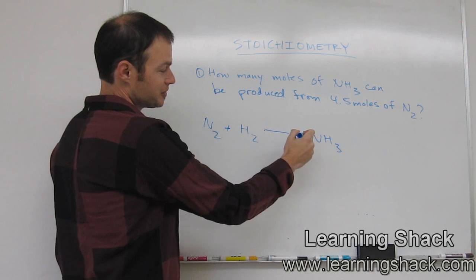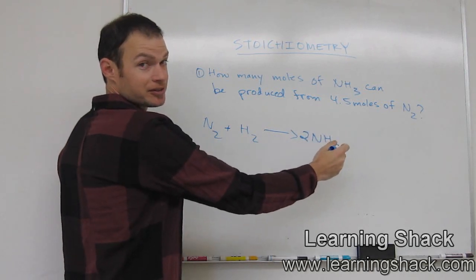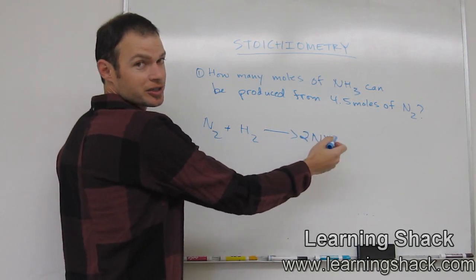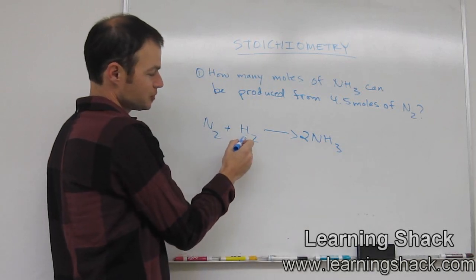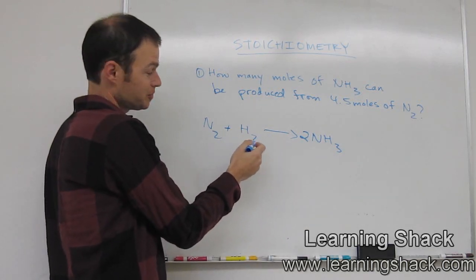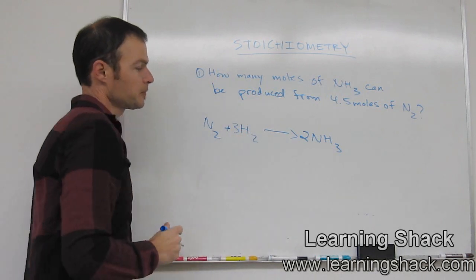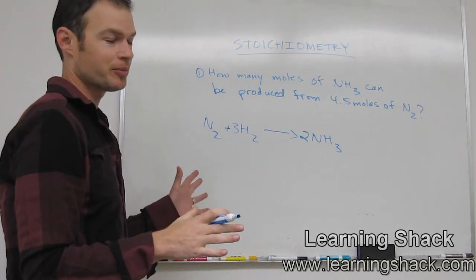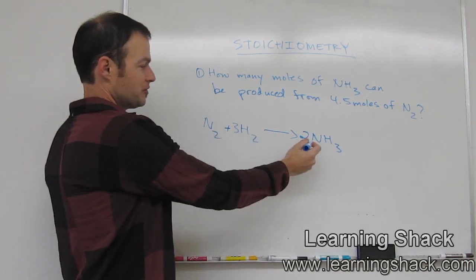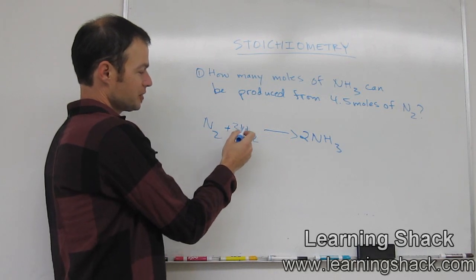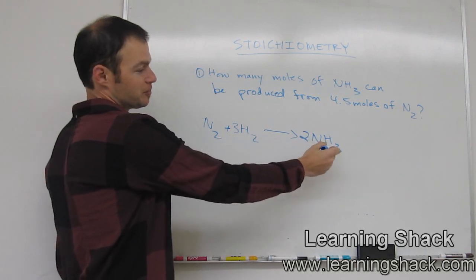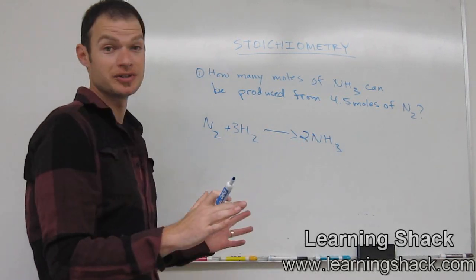But what happens though is that this two multiplies through everything. So we have also now two times three is six hydrogens. So what number do we need to put here to make sure we have six hydrogens? We need a three. Now we can take stock and make sure that it's all balanced. Two nitrogens, two nitrogens, three hydrogens times two is six hydrogens and two times three is six over here. We're good to go.